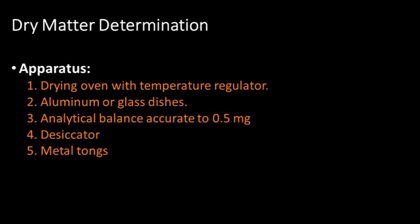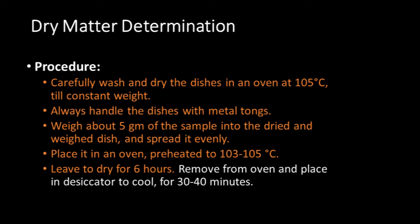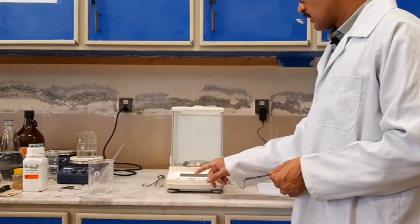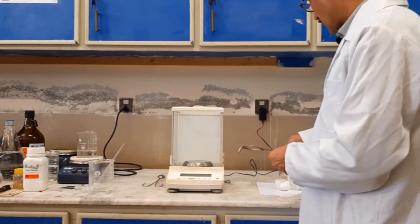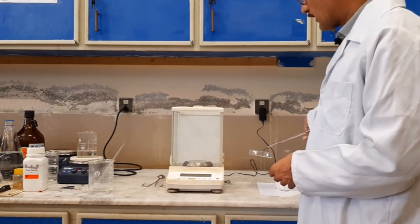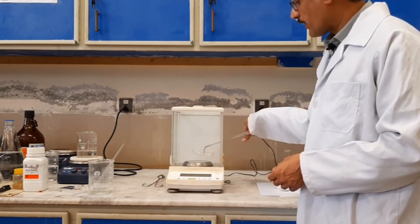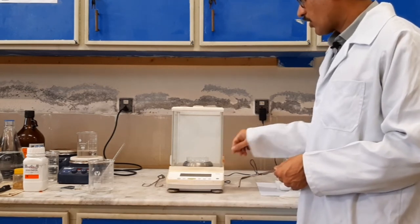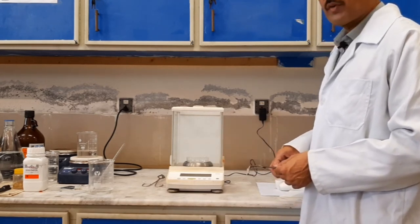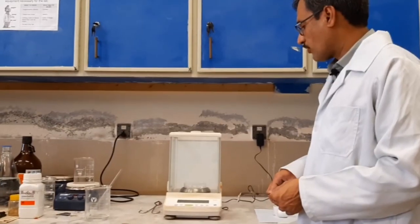Methodology of dry matter determination: Carefully wash and dry the dish in an oven at 105 degrees Celsius till constant weight. Always handle the dish with metal tongs. Turn on the balance, tare it, and then place a clean dry petri dish and weigh. Record the weight. This is the weight of empty dry petri dish.